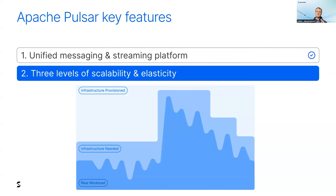I want to talk about Pulsar scalability and elasticity — these are different things. Elasticity means you can grow or shrink resources quickly to adapt to workload changes, so you can save on infrastructure costs by avoiding over-provisioning. Some data streaming platforms like Kafka and Pulsar can scale very well, but Pulsar is both scalable and elastic.